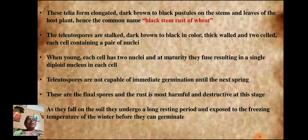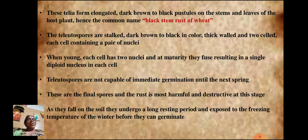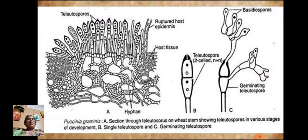The teliospores are stalked, dark brown to black in color, thick-walled, and two-celled, with each young cell containing a pair of nuclei. At maturity, the nuclei fuse, resulting in a single diploid nucleus in each cell. Teliospores are not capable of immediate germination; they require a long resting period and exposure to the freezing temperatures of winter before they can germinate in the next spring. The rust is most harmful and destructive at this stage.